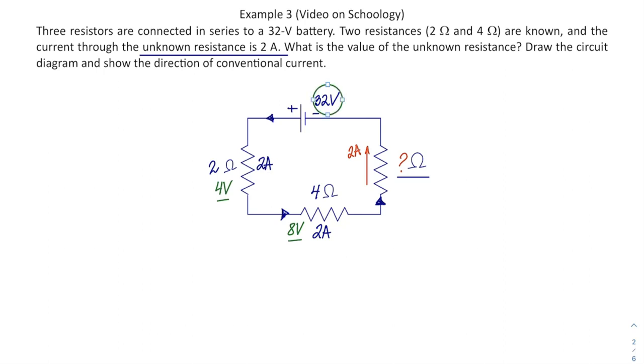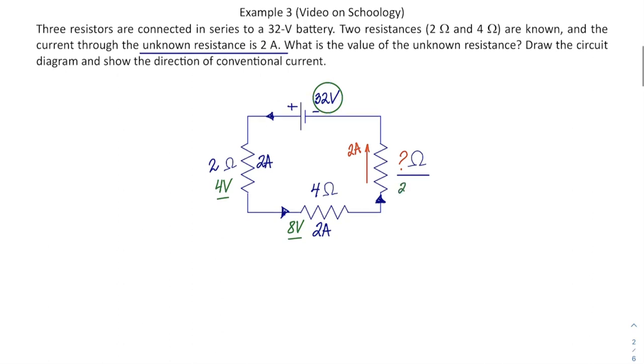If I subtract 12 that I know are here in these two resistances from the total of 32V, 32 minus 12 gives me 20V. Then if that is 20V, then 20 divided by 2, as in voltage over current, would give me resistance of 10Ω. That's one way. I figured out the remaining voltage for the unknown resistor and, knowing its current, divided voltage by current to get the resistance.